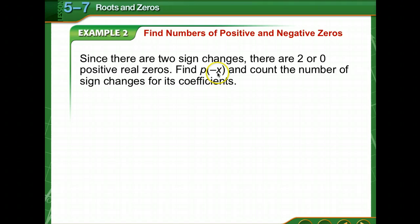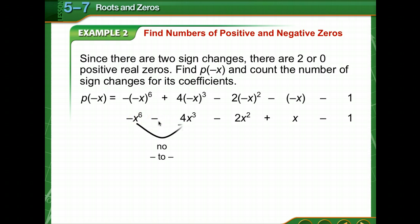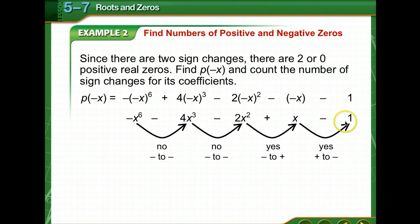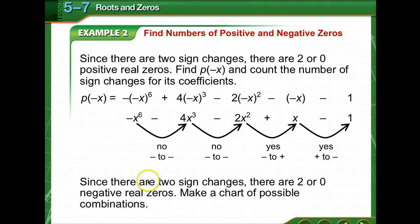Now let's find the function for negative x and count the number of sign changes — we substitute negative x in place of x. There are two sign changes. A shortcut: if the exponent is even, a negative x changes the sign to positive, so the sign of the term will not change. But if the exponent is odd, substituting negative x changes the sign. So there are two or zero negative real zeros possible.